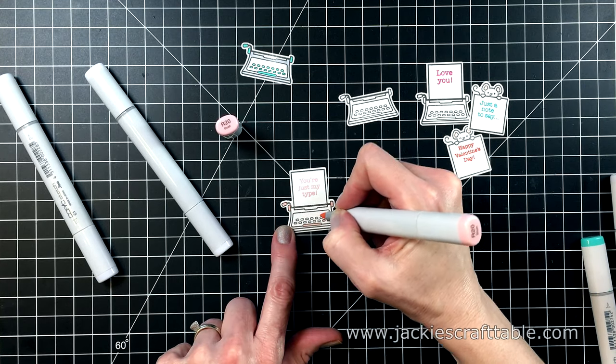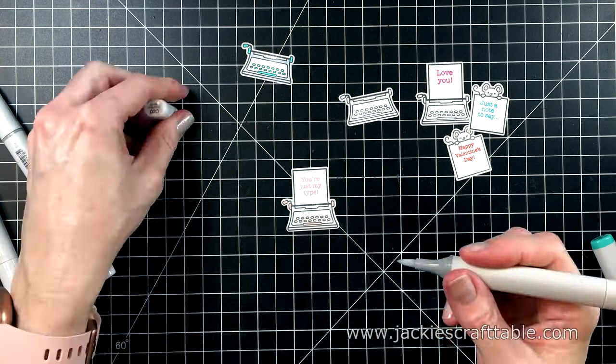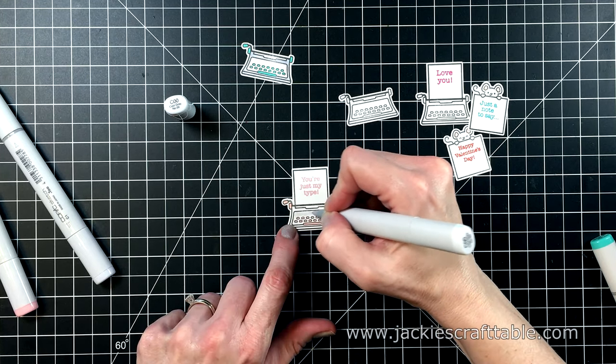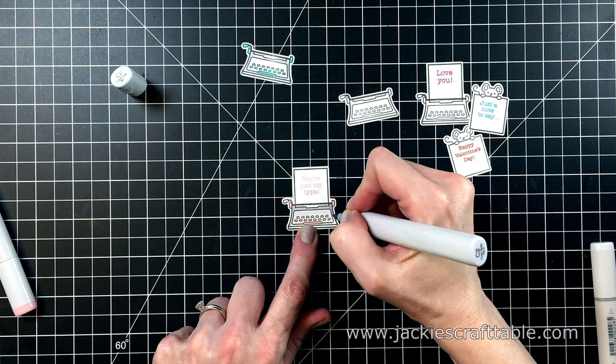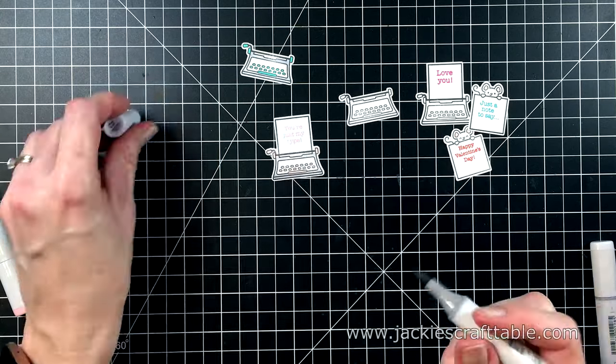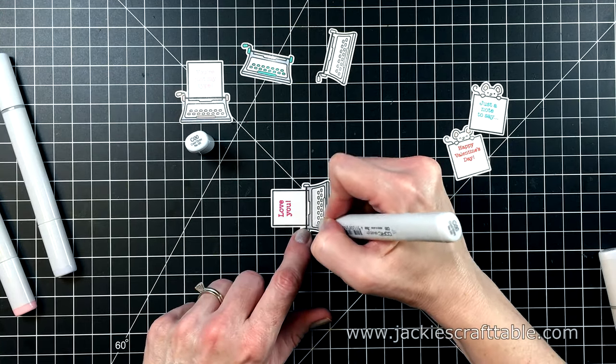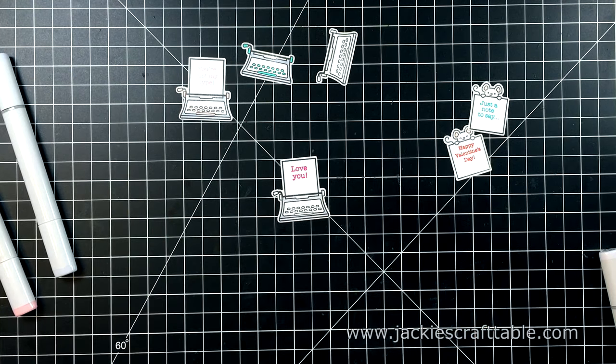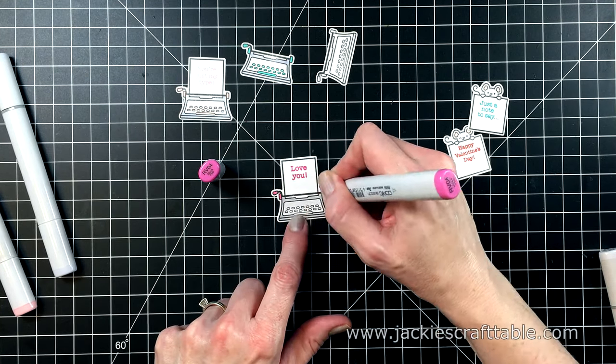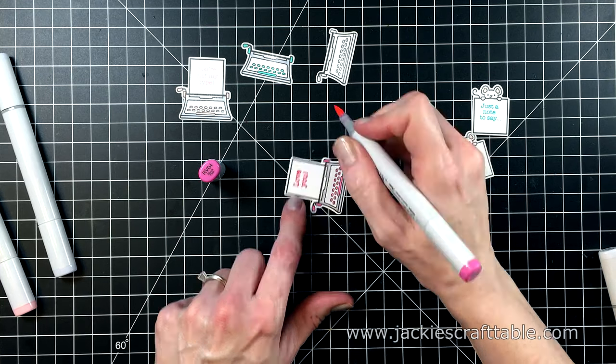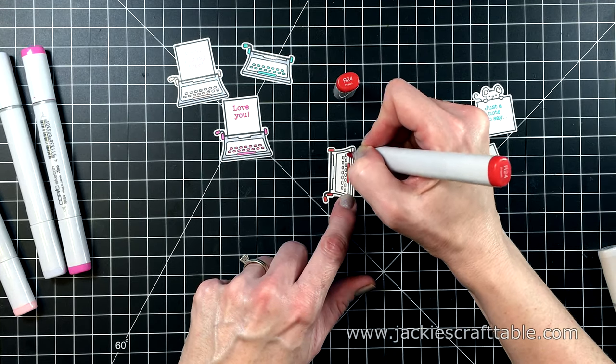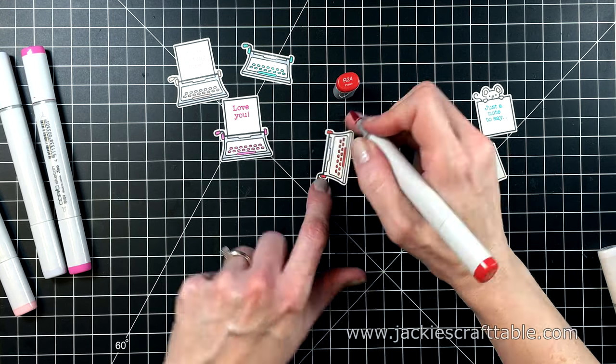My son Jack just loves typewriters—he got an old one that used to belong to his grandfather, and he loves typing away on that thing. It's actually very good for him because he's at the age where he's learning how to read, and he can sit and type out these little notes for everyone.